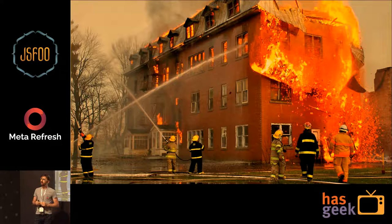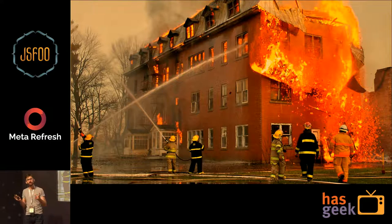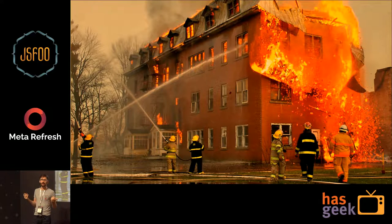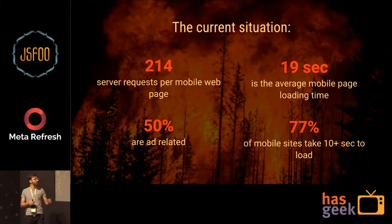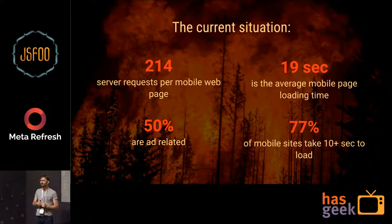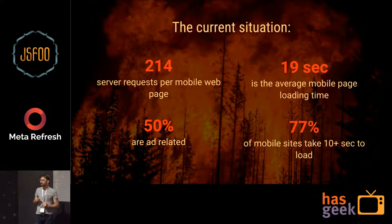Unfortunately, it wouldn't be all so bad if it wasn't the web. In a native environment — a restricted programming environment — you could probably force beacons or analytics scripts to restrain themselves. But on the web, it's like giving your key to 100 different strangers. The current situation is pretty bad: a mobile webpage makes 214 different requests, the average load time is 19 seconds, 50% of that is ad-related, and 77% of mobile sites take longer than 10 seconds to load.